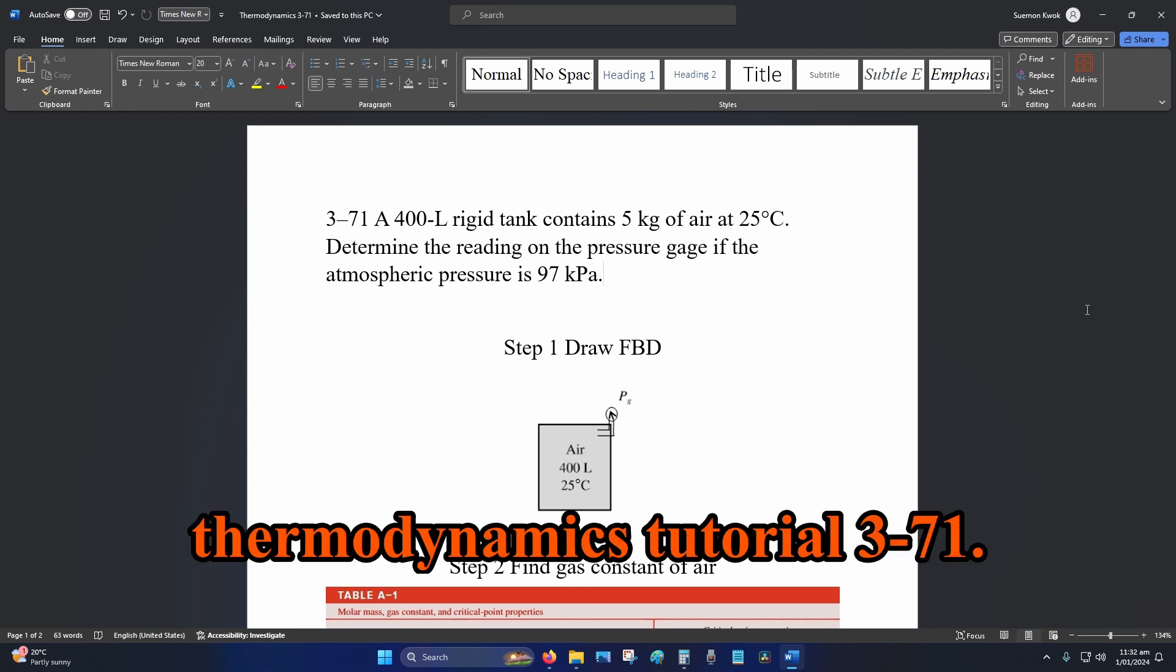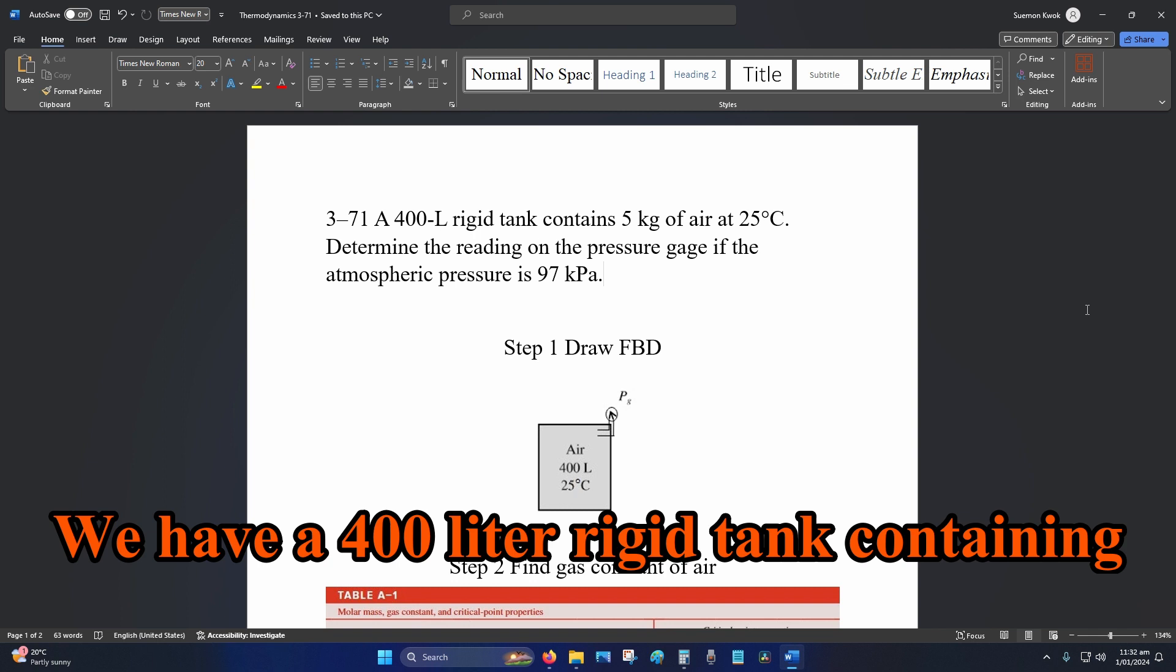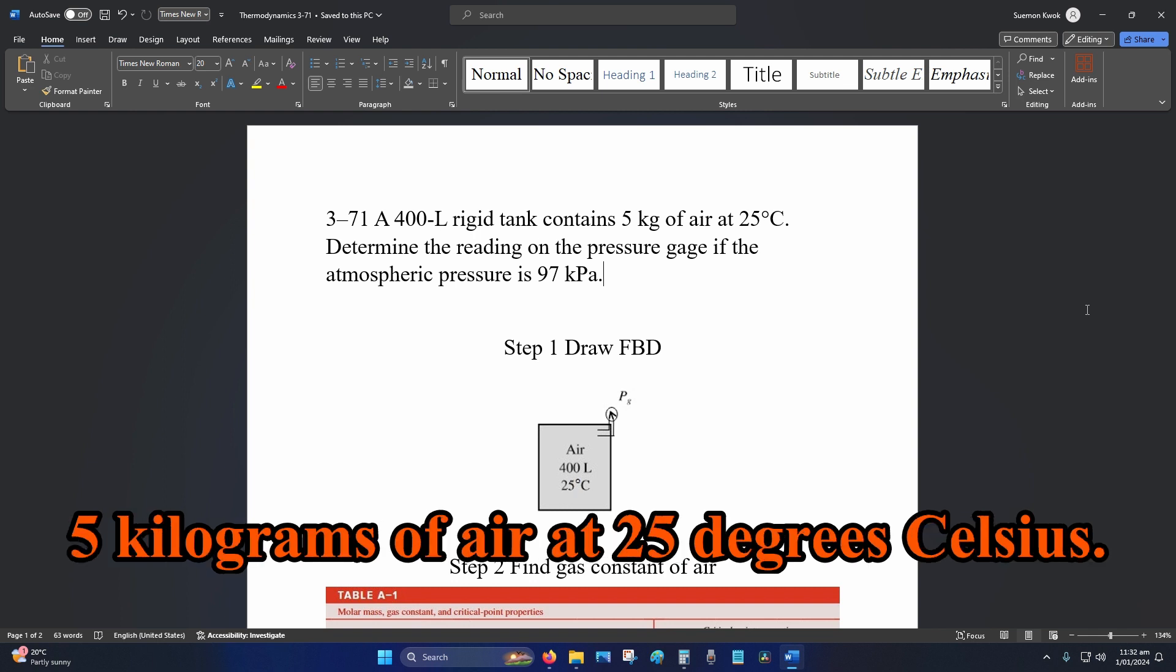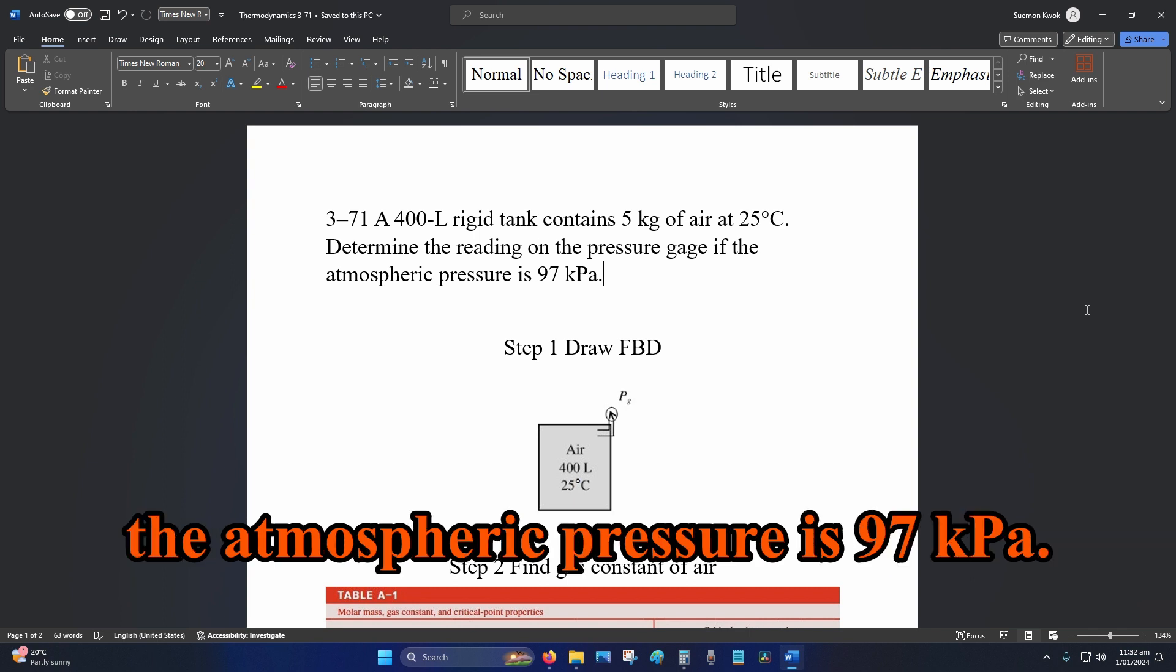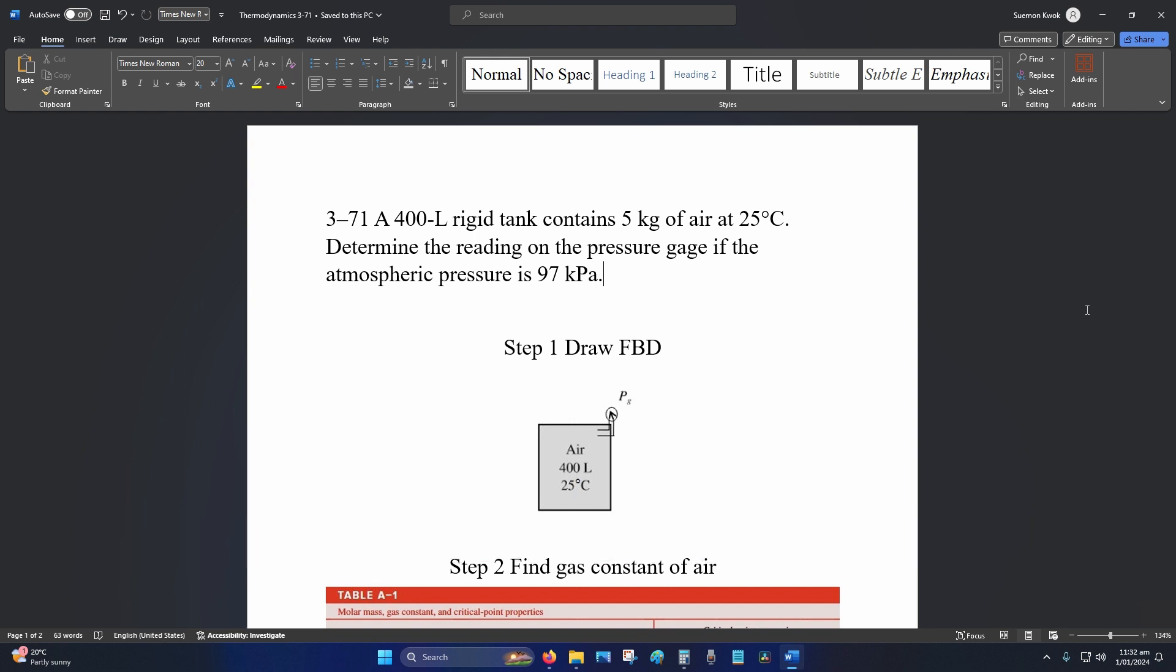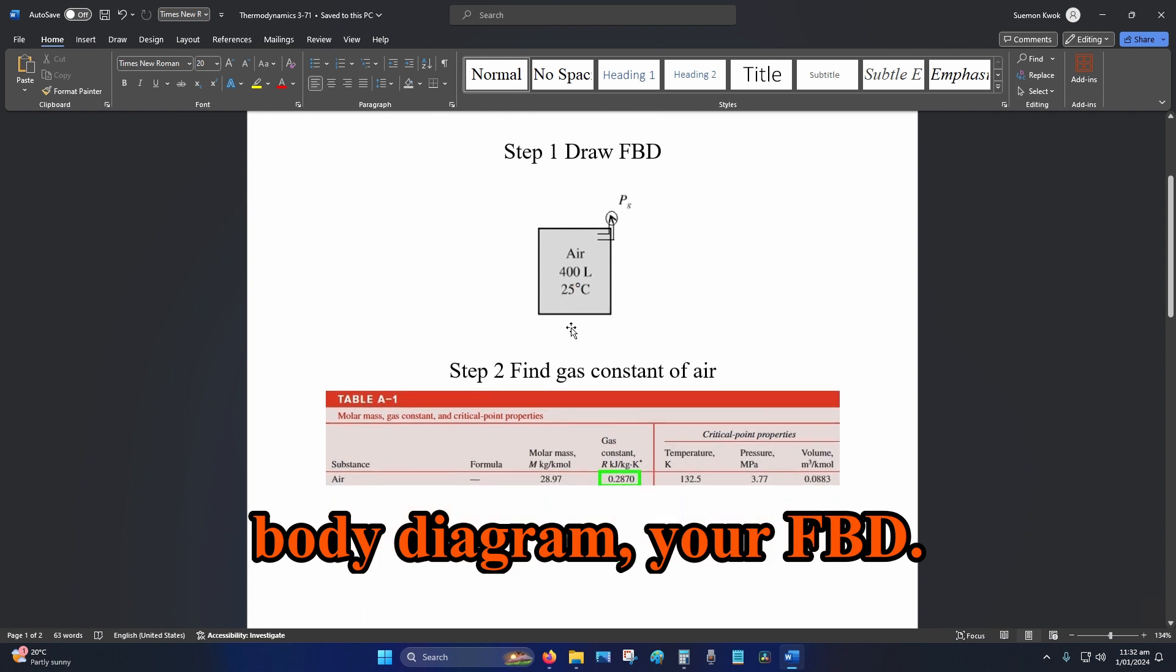Hey internet, welcome to thermodynamics tutorial 3-71. We have a 400 liter rigid tank containing 5 kilograms of air at 25 degrees Celsius. We want to find the gauge pressure and the atmospheric pressure is 97 kPa. Step one: draw your free body diagram, your FBD.